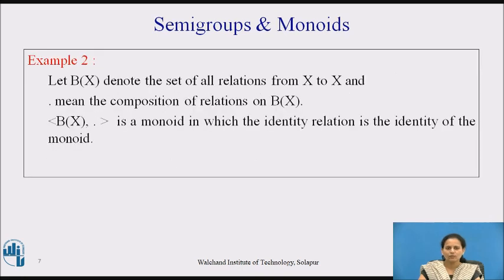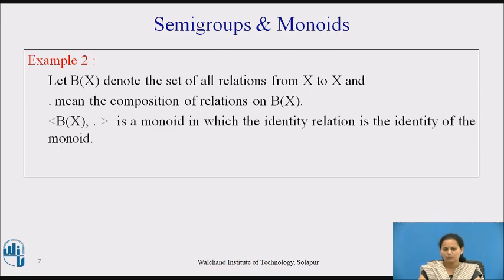Example 2: Let B(X) denote the set of all relations from X to X and dot mean the composition of relations on B(X). The algebraic system (B(X), dot) is a monoid in which the identity relation is the identity of the monoid. We all know what an identity relation is. In this example, the identity relation itself acts as the identity for the monoid (B(X), dot). Also, (B(X), dot) is a semigroup where the dot operation is associative.